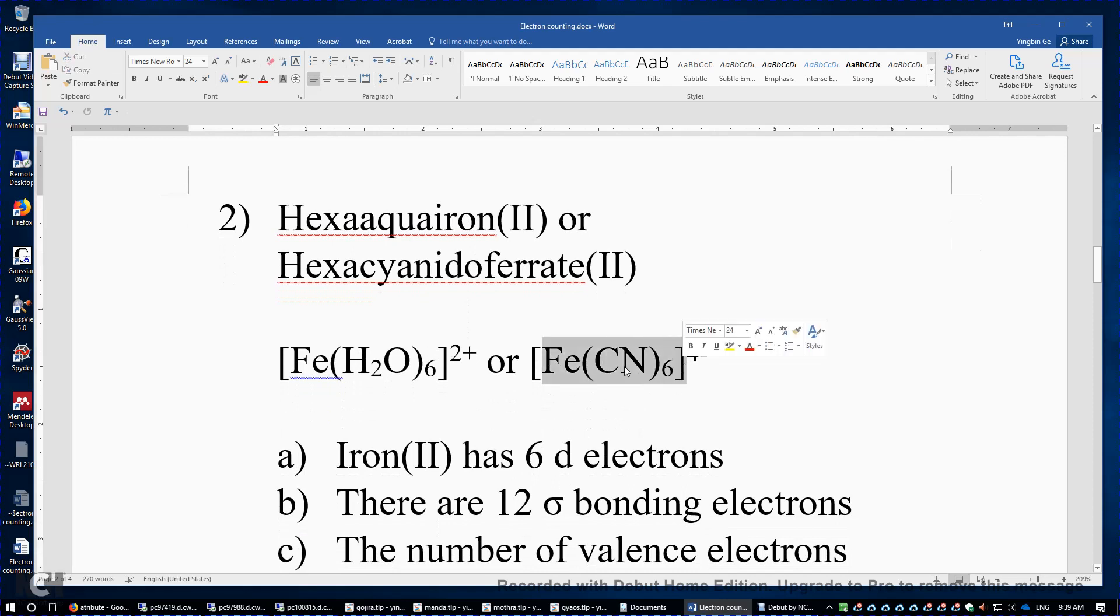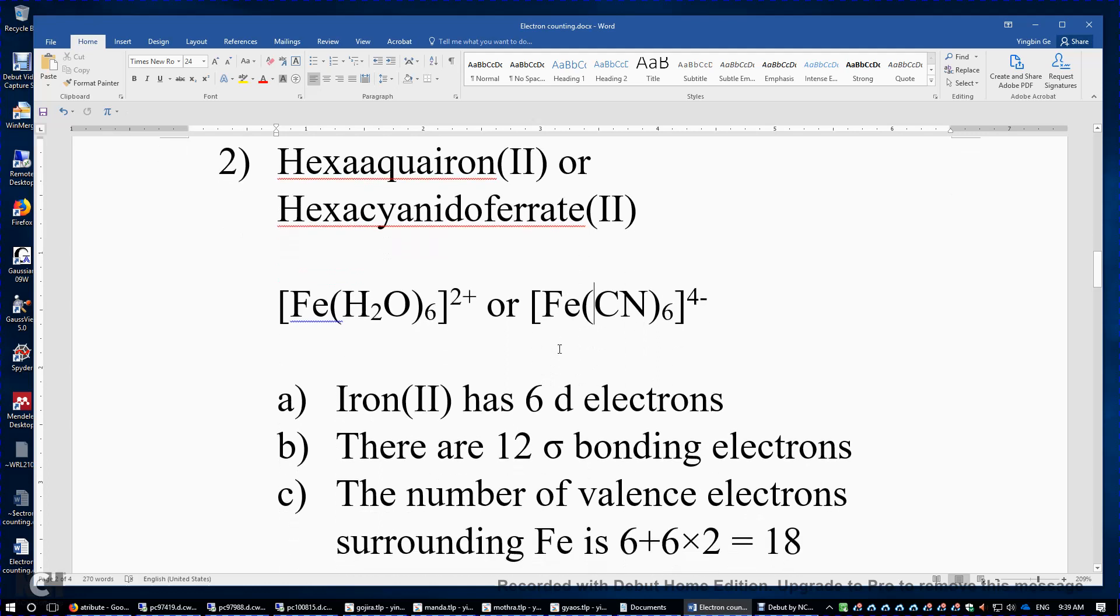If you look at this one, we need to allocate the bonding electrons to the cyanide ligands. So each CN has a negative 1 charge. Overall, you have 6 negative charges here and plus 2 charge on this iron. And then overall, there's a 4 minus charge. And then when you have iron(II), it has 6 d electrons.